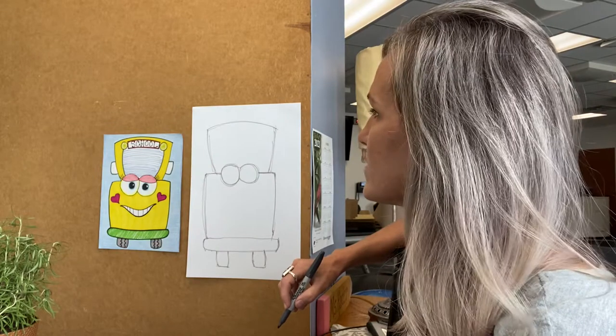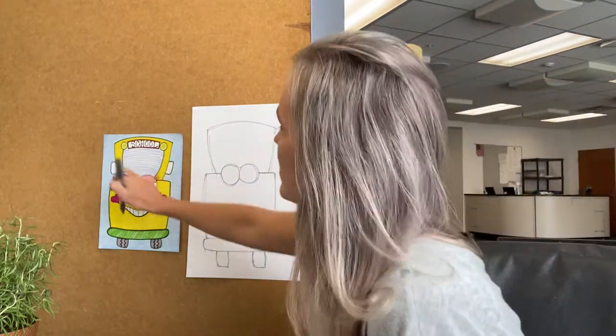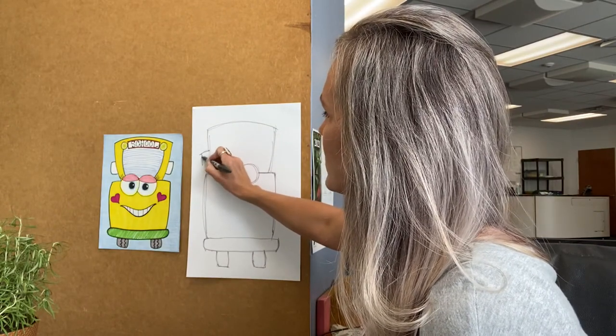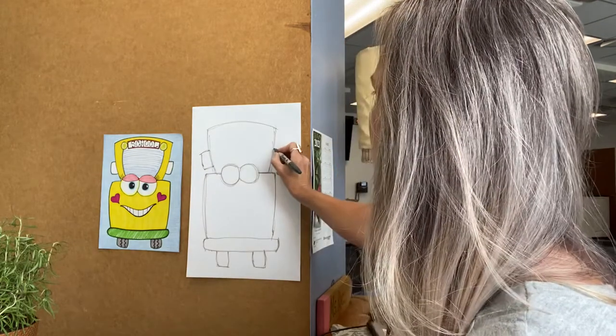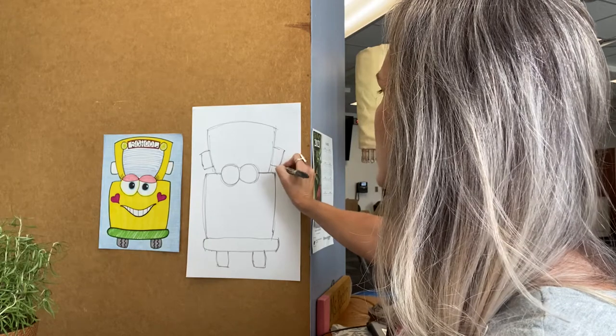We need to add the mirrors on the sides. They kind of look like our bus's ears but those mirrors help our bus drivers see what's behind them and beside them. They're a rectangle shape.